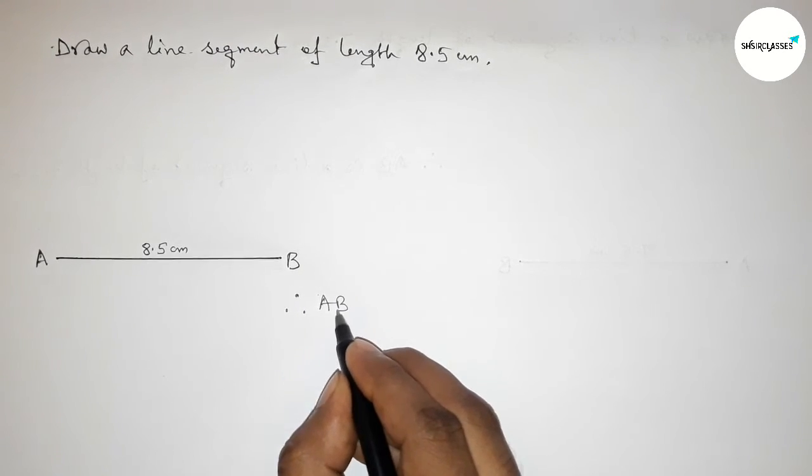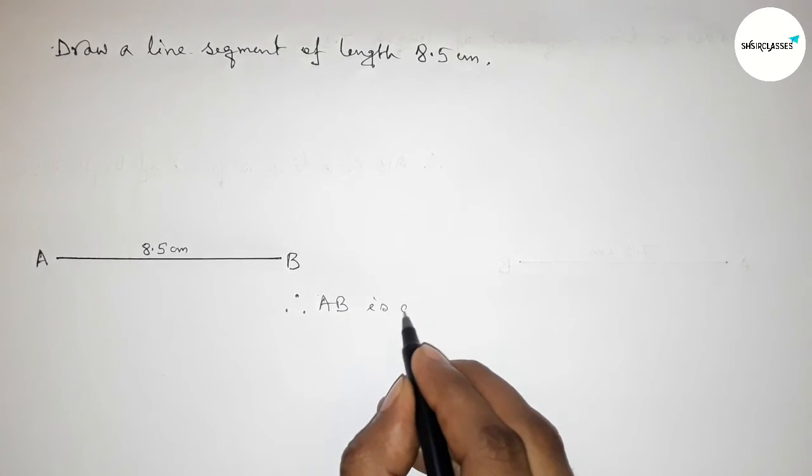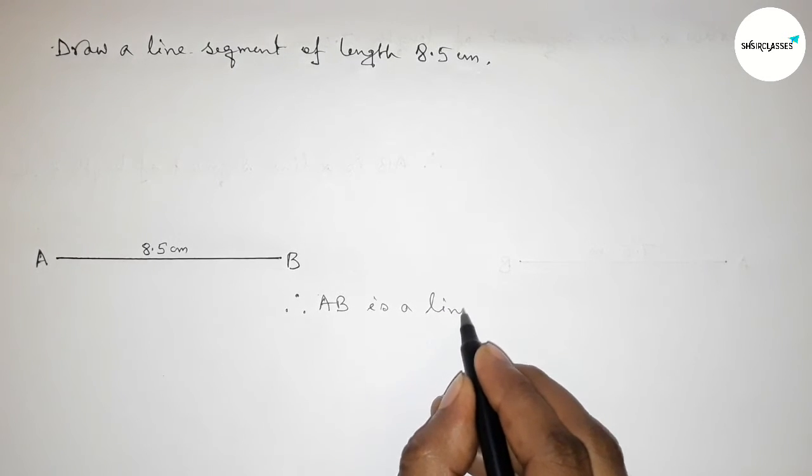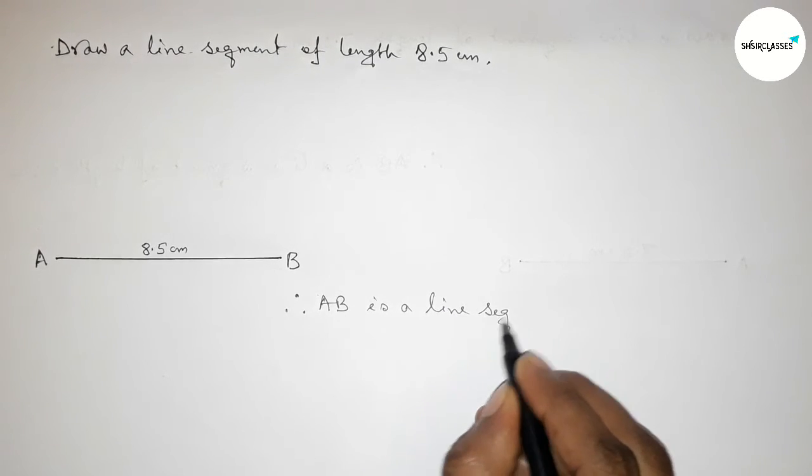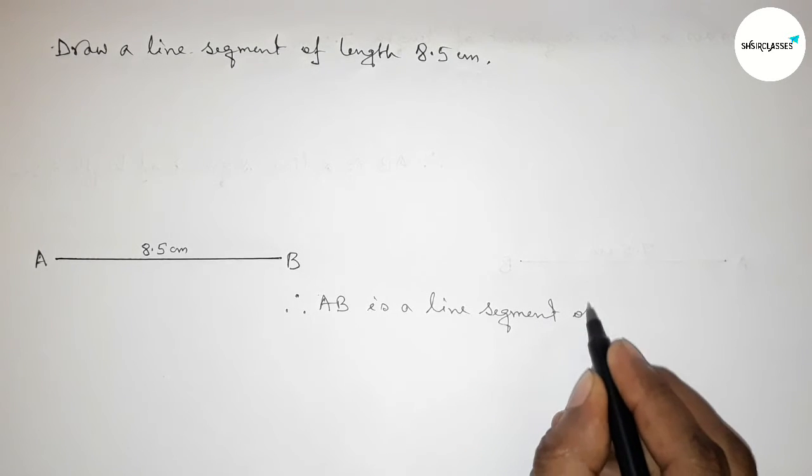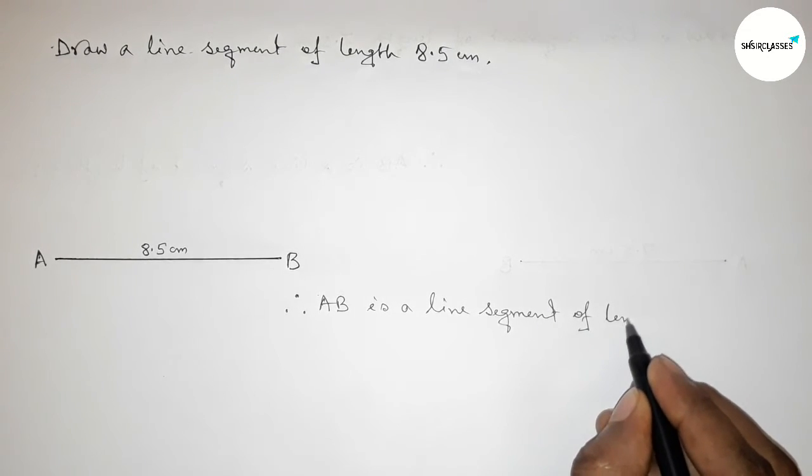Say that AB is a line segment of length eight point five centimeters, and with the help of a scale you can draw this line by this way at home.